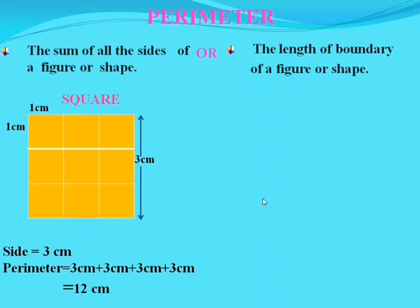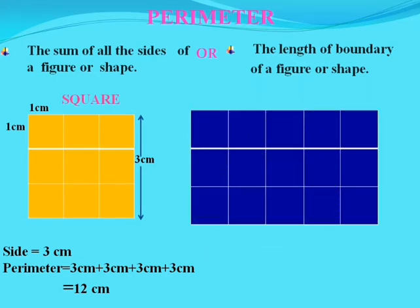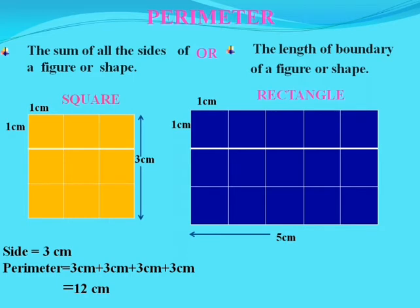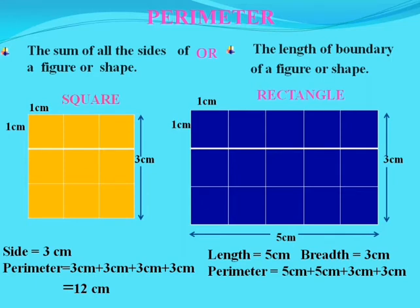Now take an example of a rectangle. This rectangle has many squares in it, and each square has a side of 1 cm. So the length of this rectangle is 5 cm and the breadth is 3 cm. The perimeter of this rectangle is 5 cm + 5 cm + 3 cm + 3 cm — that is the sum of all the sides — which becomes 16 cm.